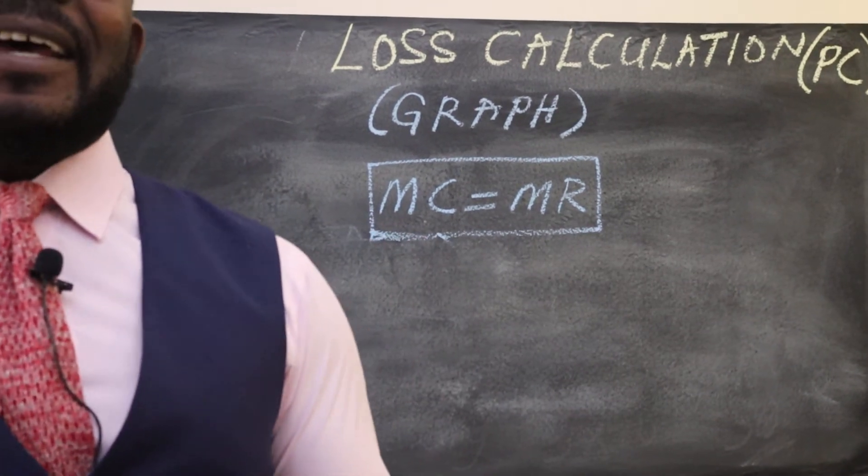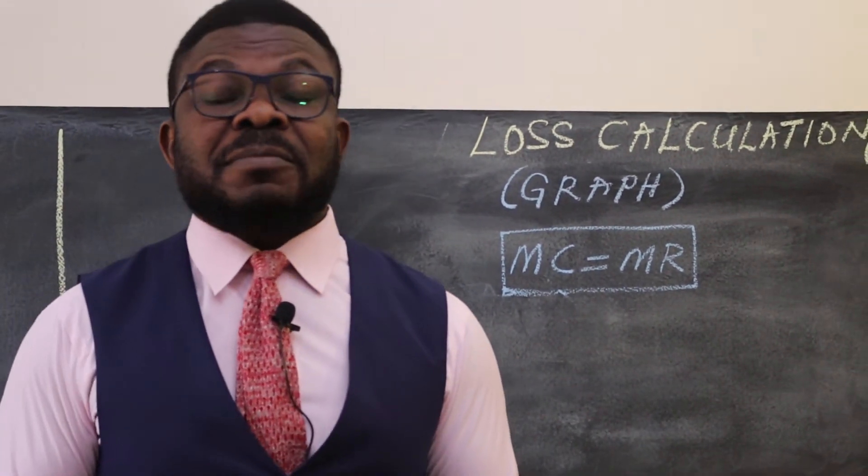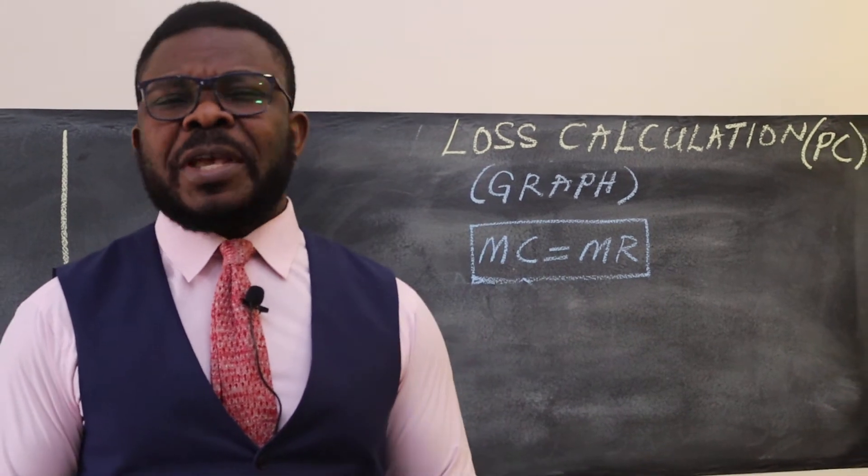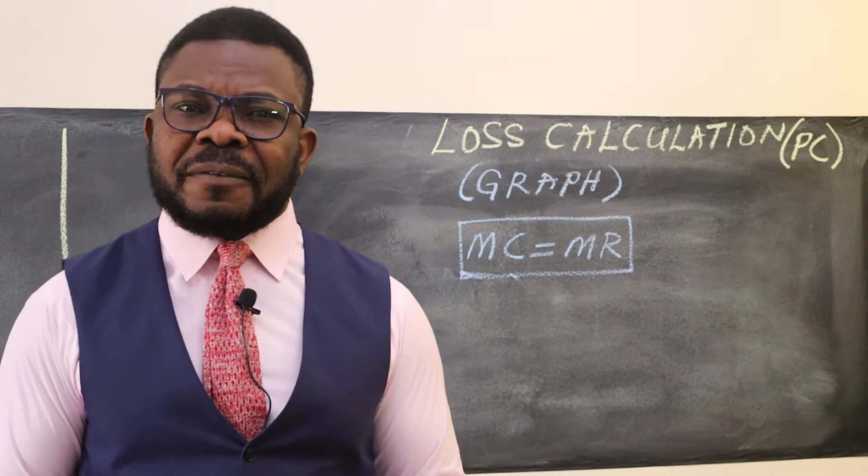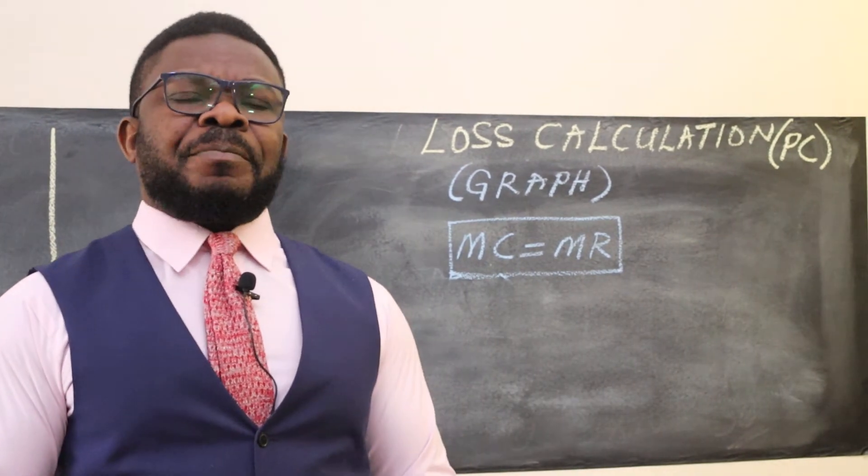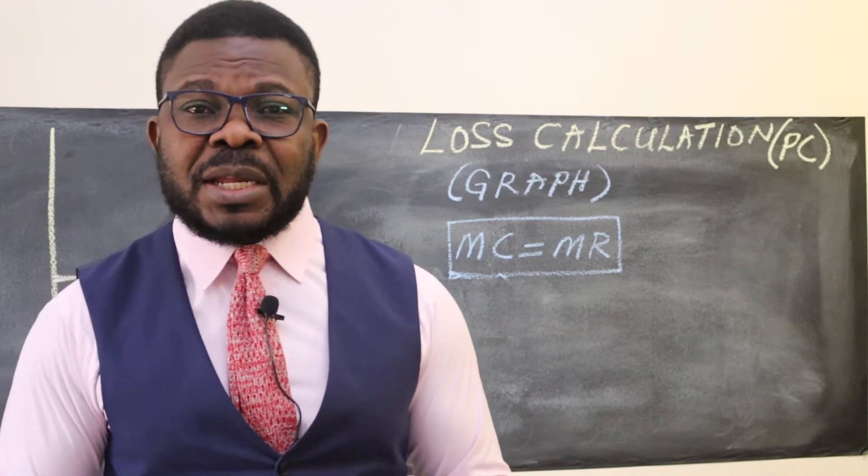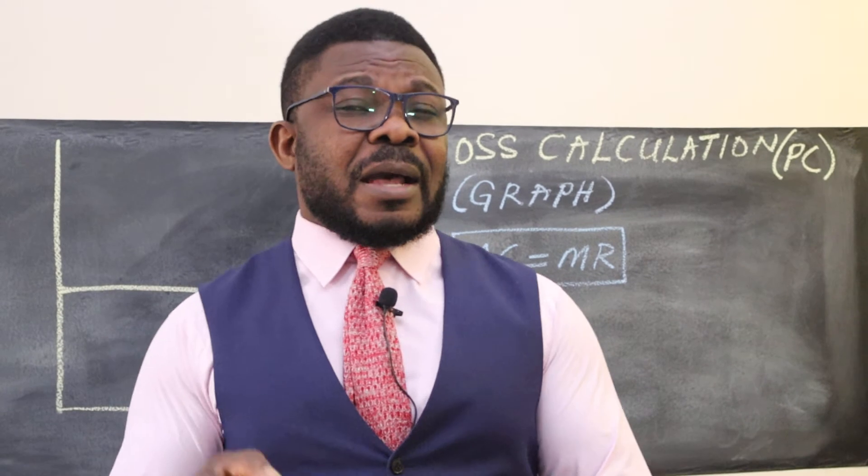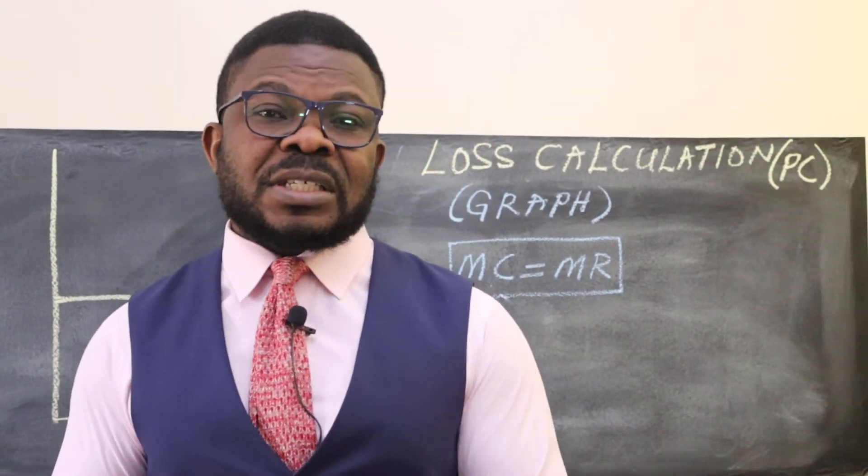Loss calculation: sometimes firms make losses, sometimes they make profit. In the previous lesson we covered profit, but now let's look at how loss looks like on a graph. Remember that price is a key determinant in making a profit or loss. Average total cost is also a key determinant, just like quantity.